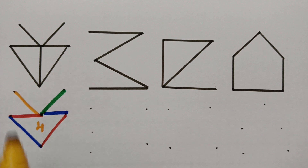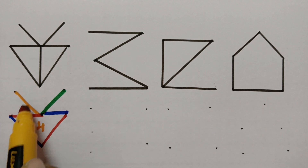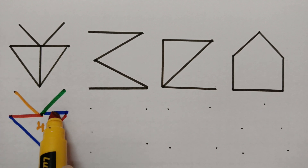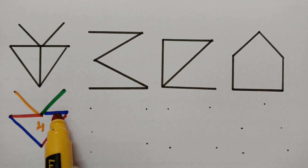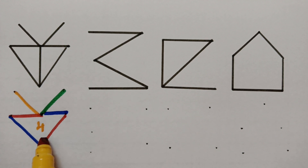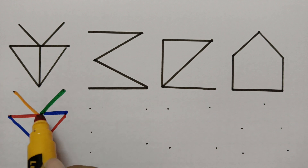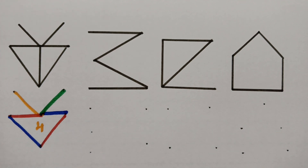Checking the result: the edge pairs are red-yellow, blue-green, blue-red, red-blue, and red-blue. No two similar colors appear for adjacent edges, confirming the coloring is valid.